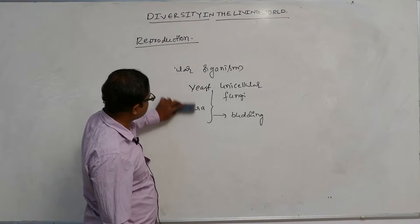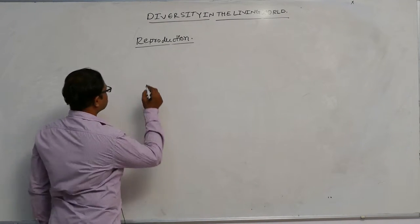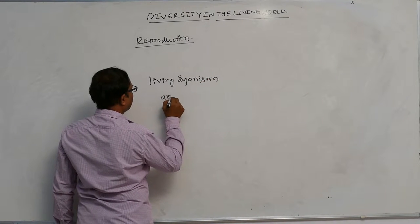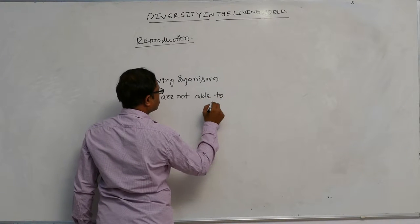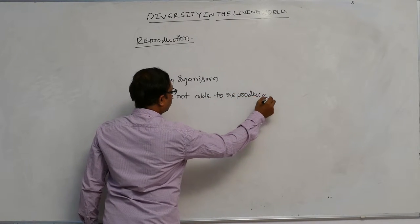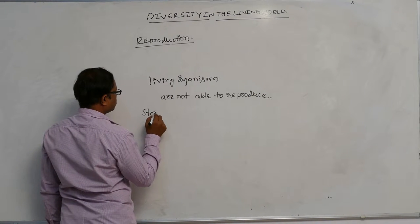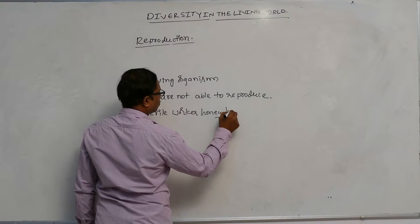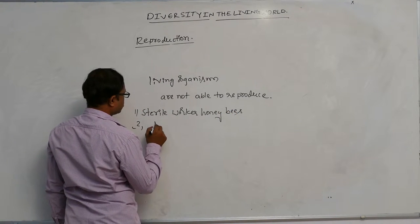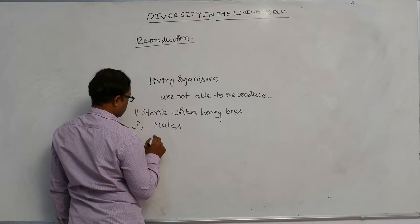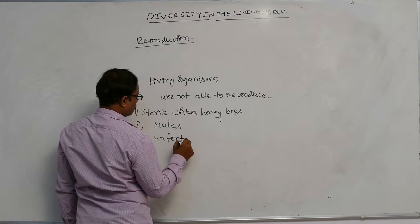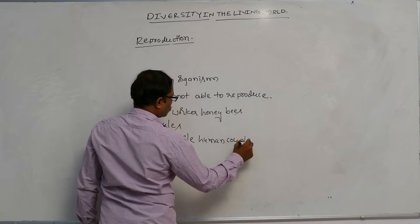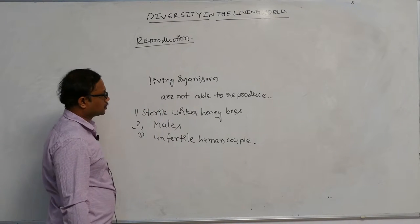Some living organisms are not able to reproduce. These include sterile worker honey bees, mules, and infertile human couples. These three living organisms are not able to reproduce.